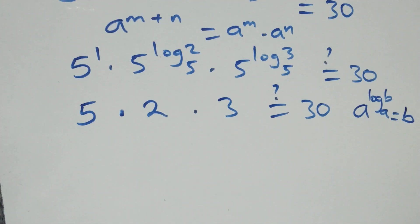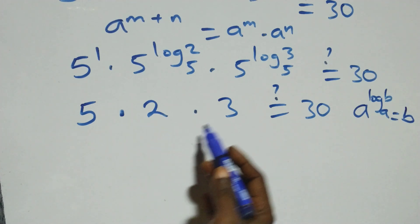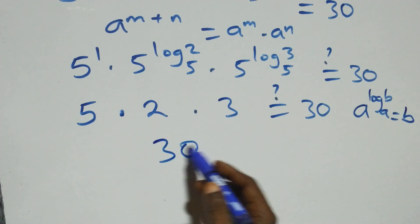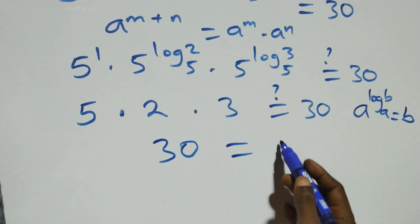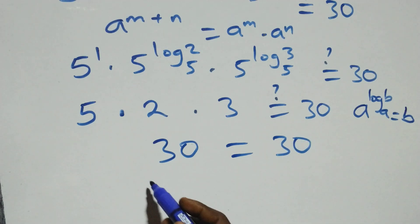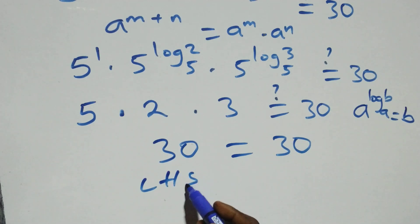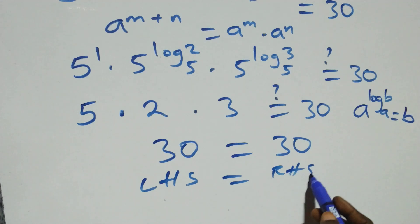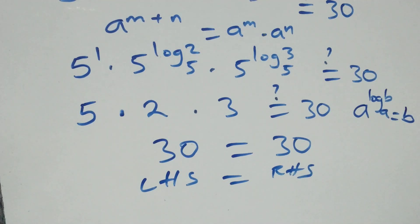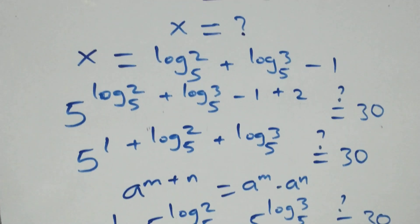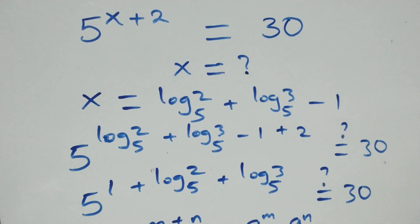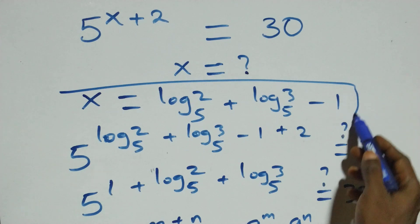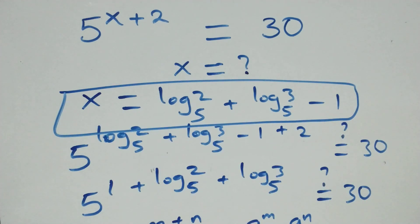Then here 5 times 2 is 10, then times 3 is 30, which equals to 30 on the right-hand side. The left-hand side equals the right-hand side. And therefore, we conclude that x equals to log 2 base 5, plus log 3 base 5, minus 1 satisfies the given problem.